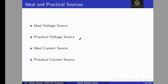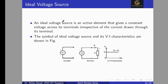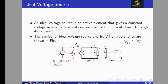Ideal and practical sources are classified into four categories: ideal voltage source, practical voltage source, ideal current source, and practical current source. For the ideal voltage source, if we connect a load ZL across it, the voltage across the load equals the source voltage (VL = VS), regardless of the load current IL. This is because an ideal voltage source has zero internal impedance.